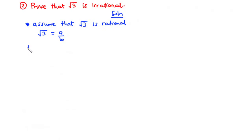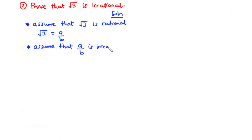The next thing is to assume that the fraction a over b is irreducible. By irreducible, we mean that the fraction a over b is already in the simplified form, and thus a and b are co-prime numbers.